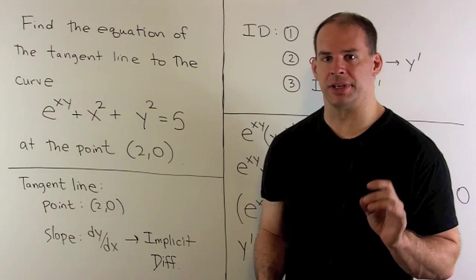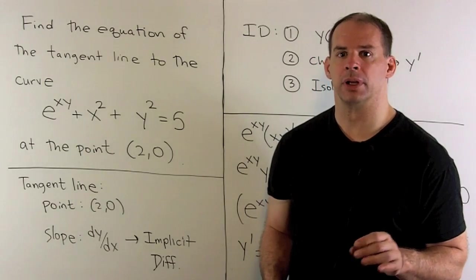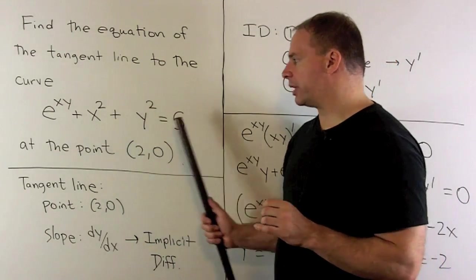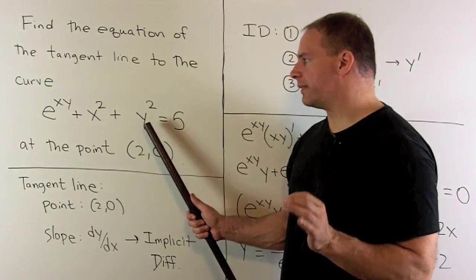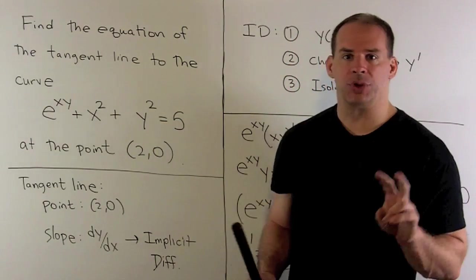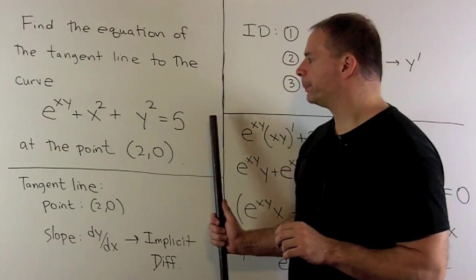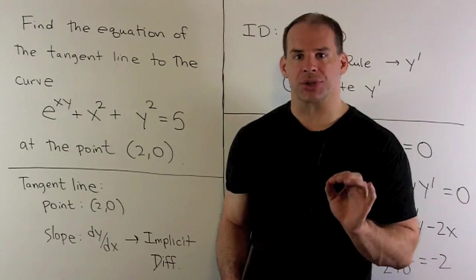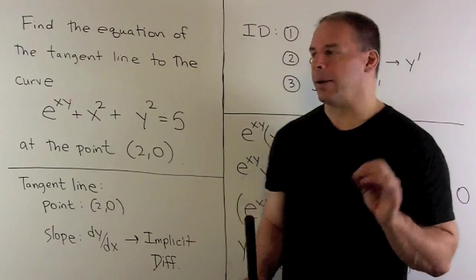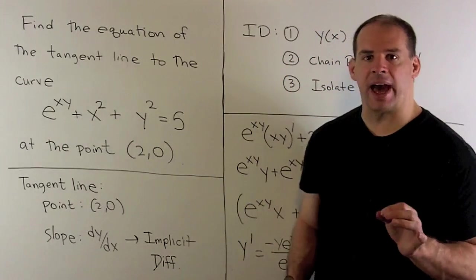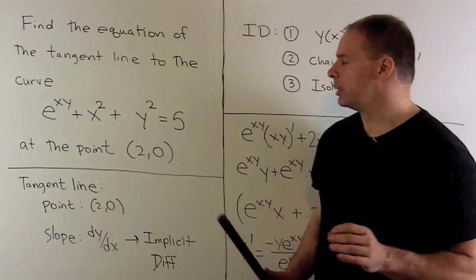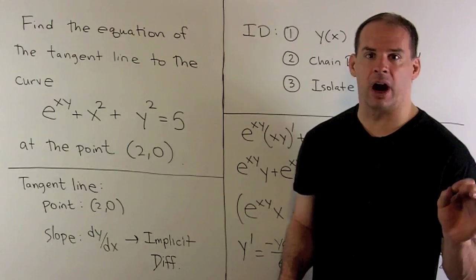Let's perform our implicit differentiation. We have our equation. We treat y as a function of x. I have two expressions that are equal. When I take the derivatives, they're going to be equal also. Derivative of 5 with respect to x is going to be 0. So the right-hand side, taken care of.